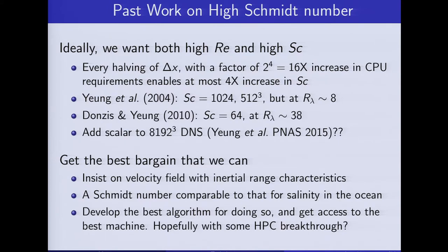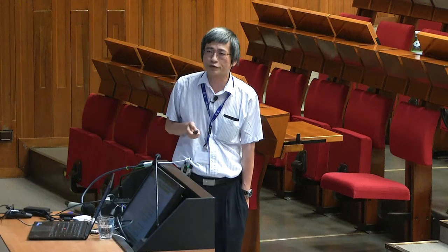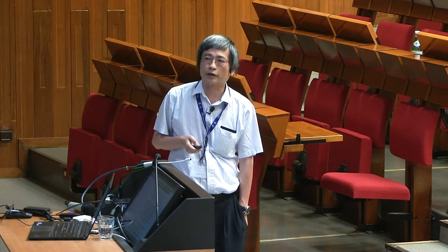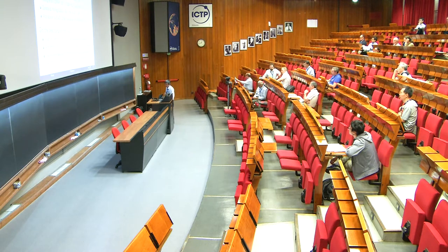What we have to do is try to get the best scaling that we can. We insist on a velocity field with some inertial range — at least Re_lambda of 36. We want a Schmidt number as high as possible, comparable to salinity in the ocean, which is around 700. So we need to develop the best algorithm for doing that and get access to a large machine. Along the way there have been some high-performance computing advances that we have been able to make.